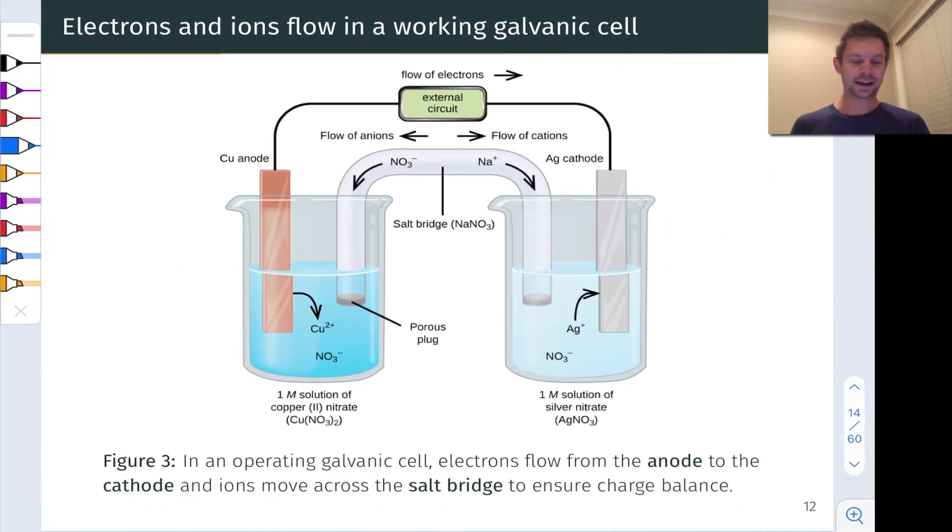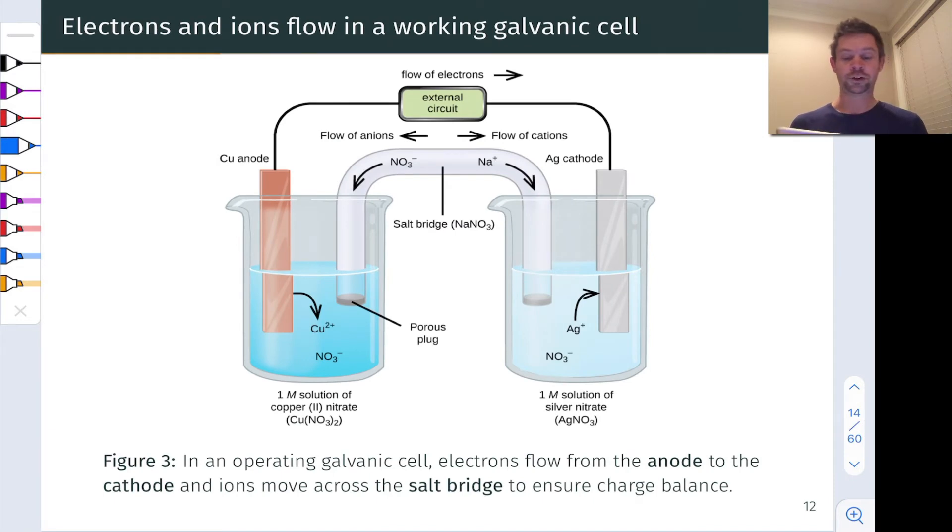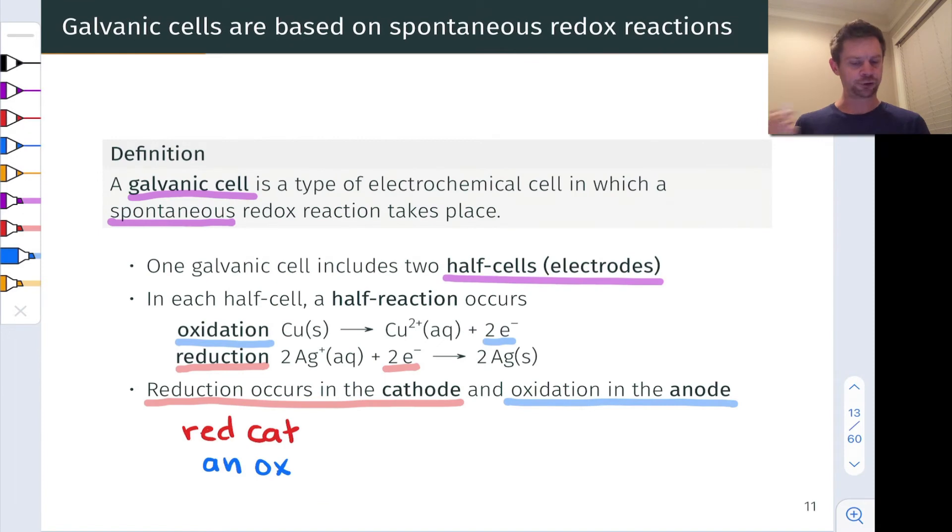All right, let's now take a look at the typical construction of a galvanic cell. There's a lot going on here, so we're going to take it one at a time. This is a copper-silver galvanic cell. On the left-hand side, we have a strip of copper metal immersed in a copper two plus solution, copper two nitrate solution specifically. Notice that those are the two components of the oxidation half reaction: copper metal and copper two plus.